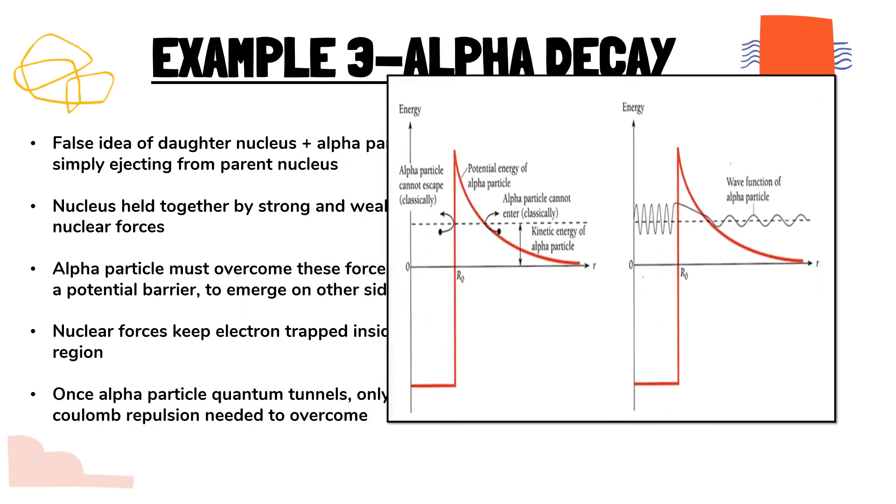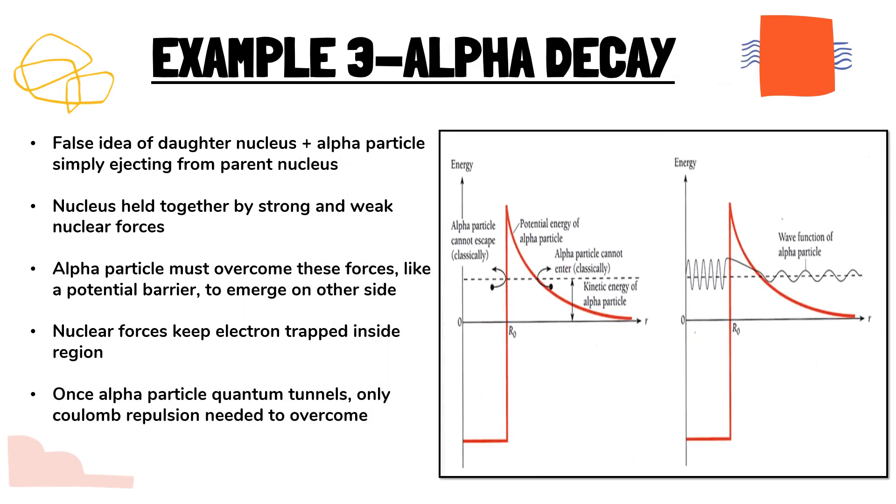As we can see in this graph, the forces are creating a barrier, a potential barrier and keeping the alpha particle trapped inside. The kinetic energy of the alpha particle is not enough to overcome the barrier classically.